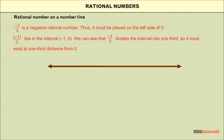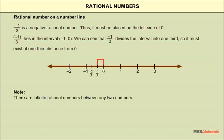-1/3 is a negative rational number, so it must be placed on the left side of 0. -1/3 lies in the interval (-1, 0). We can see that -1/3 divides the interval into one-third, so it must exist at one-third distance from zero. Note: there are infinite rational numbers between any two numbers.